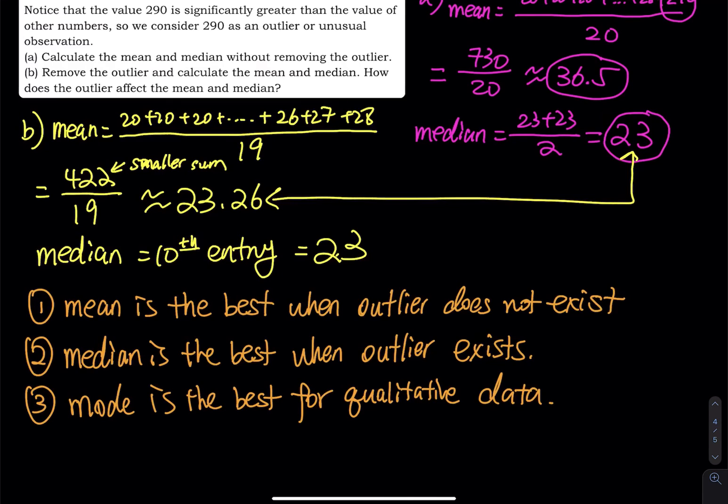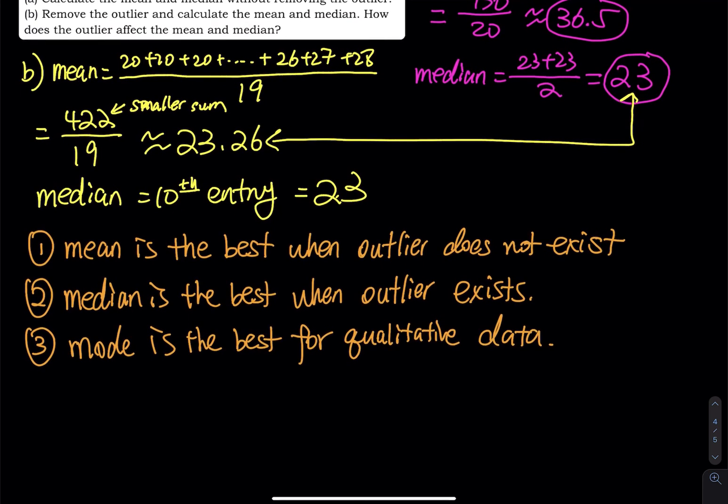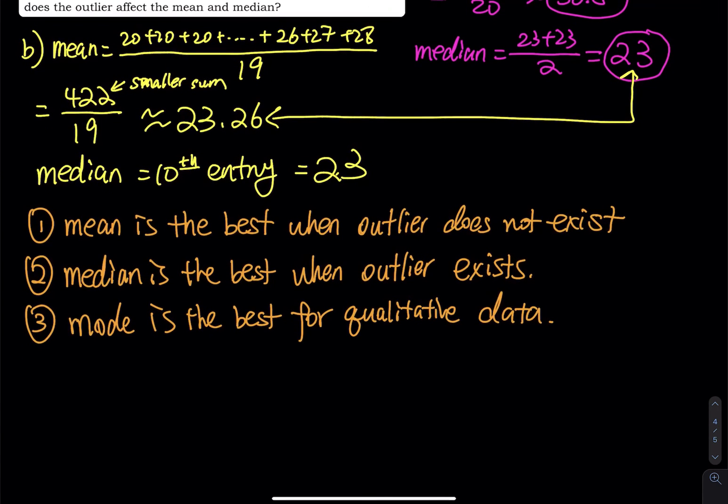When outlier exists, take the median. When there is no outlier, use the mean. So for the median, have you heard about this before? So you live in a city, right? So when people talk about the housing, they use the median, they use the median housing price.